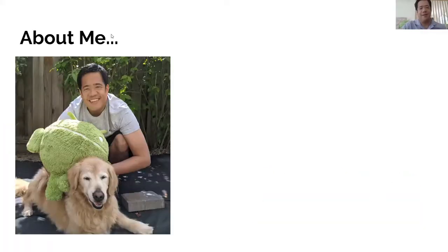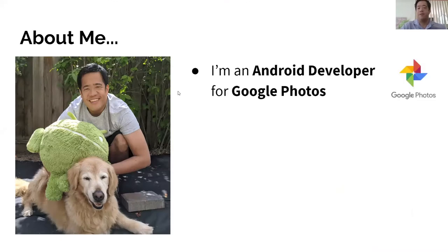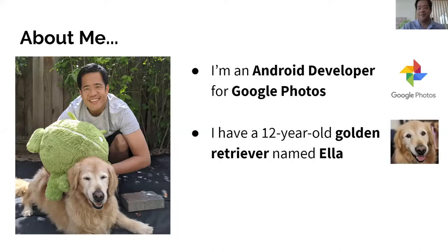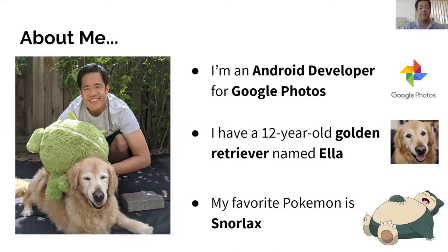Hey guys, my name is James, and I'm going to talk to you a little bit about Android. I'm a developer for Google Photos — I work on the Android app. Google Photos is a photos app that's pre-installed on all Android devices. It backs up your photos for free and allows you to edit, share, and print them, and do a lot of cool things. It's also on iOS. I have a golden retriever named Ella — she's 12 years old and I love her dearly. My favorite Pokemon is Snorlax, because all he does is eat and sleep all day, and that's an amazing way to live.